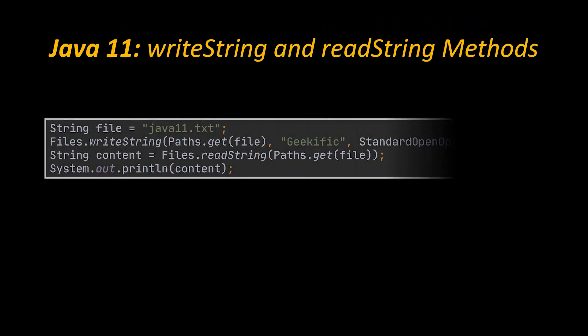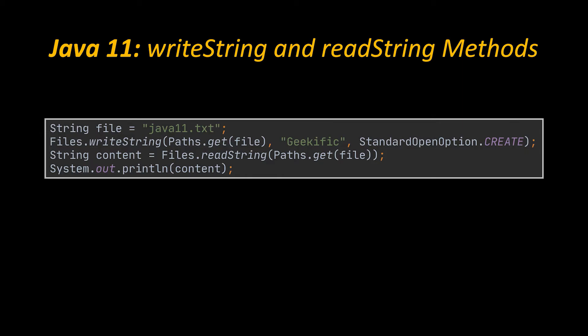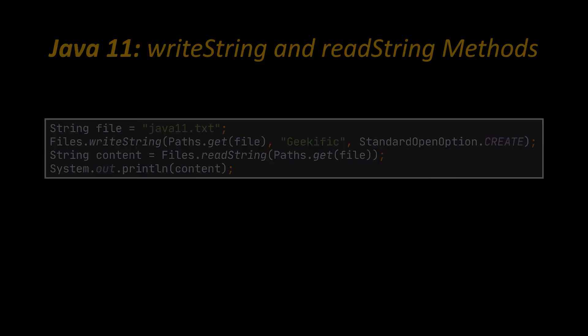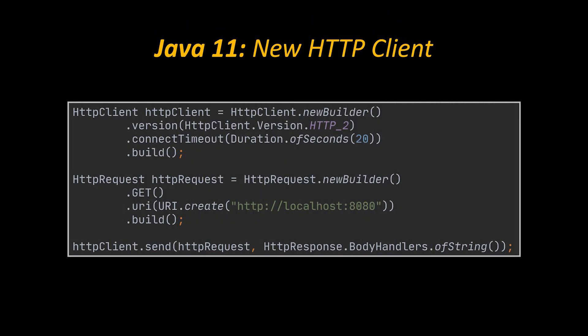Concerning the NIO package, which we also discussed in a previous video, two main methods were added to it: the writeString and readString methods, as you can see in the example in front of you. Finally, the last thing I want to mention in this first section is the new HTTP client, which now uses the builder pattern and is easier than ever to create, define, and use.